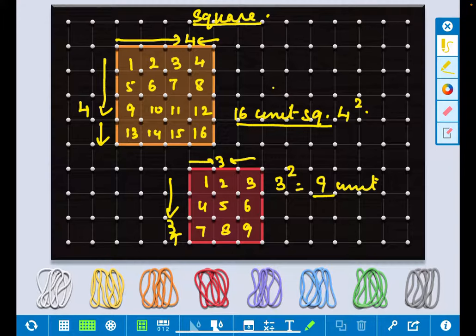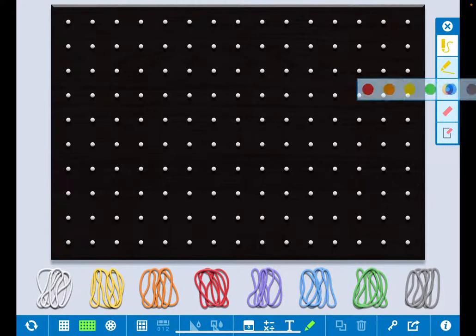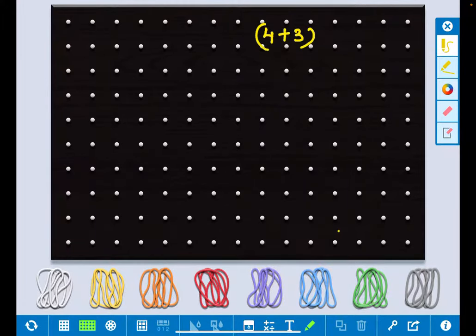If you have understood this one, just see that if we start with 4 plus 3 square, what will happen? Suppose it is 4 plus 3 square, that is 7 square, and how many unit squares we need? If I take 49.